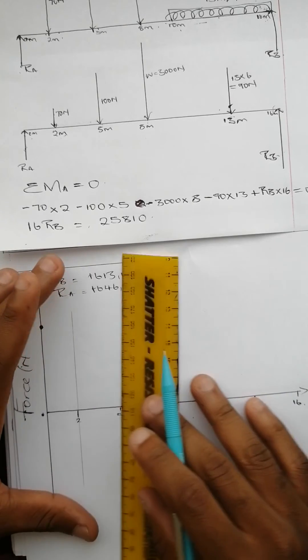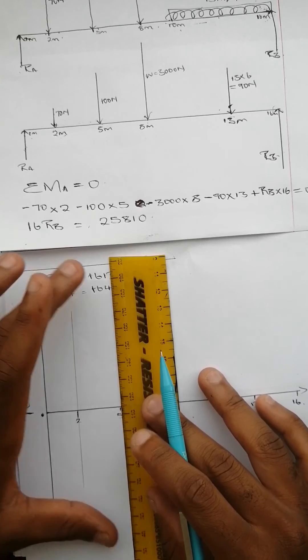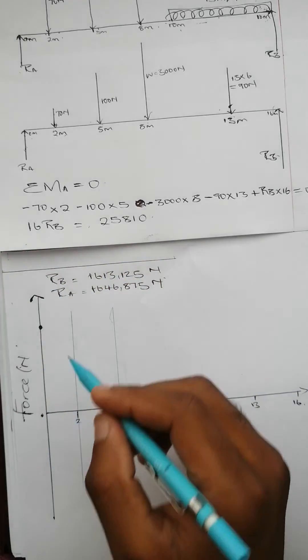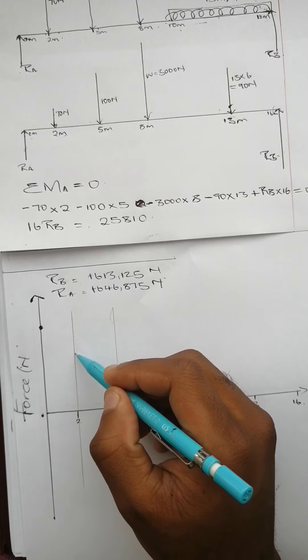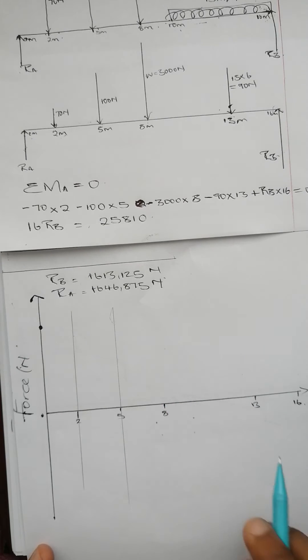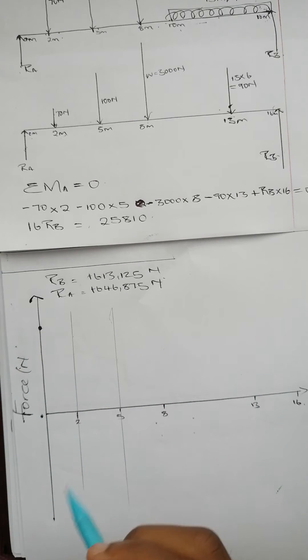What's going to happen is that at each point where there's a point load, we're going to stop slanting, subtract that point load, continue slanting, subtract the next point load, and continue slanting until the end.